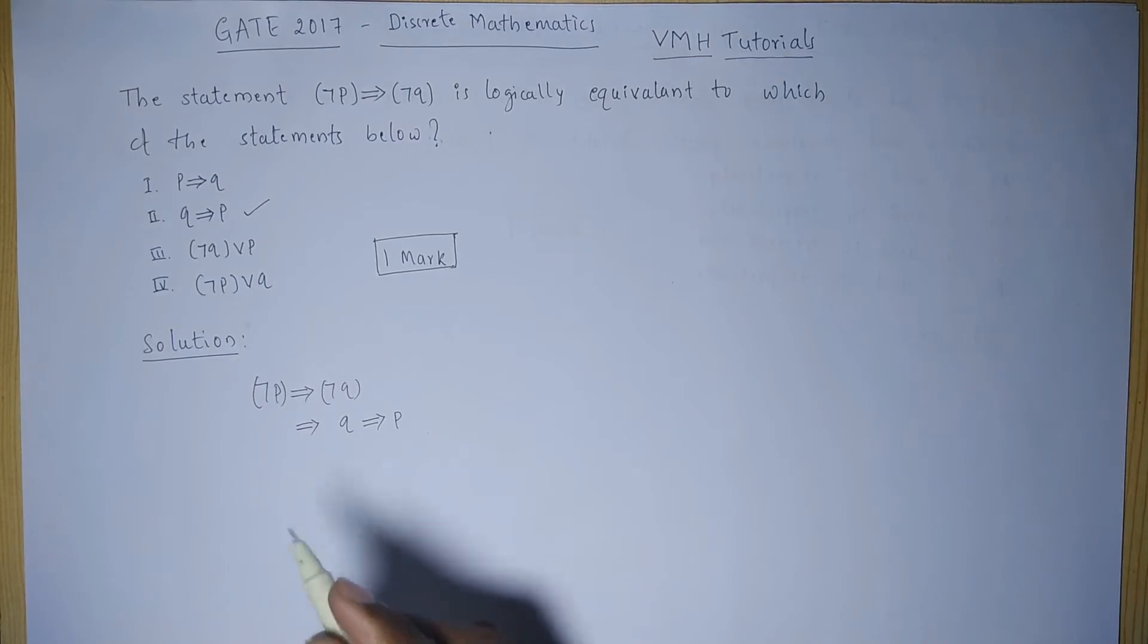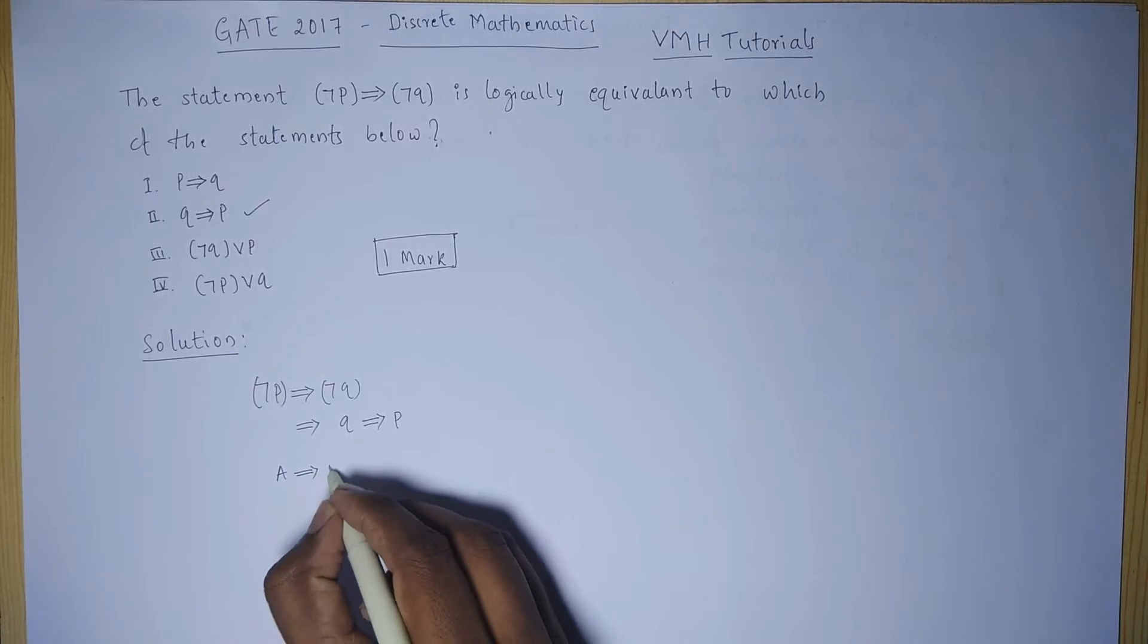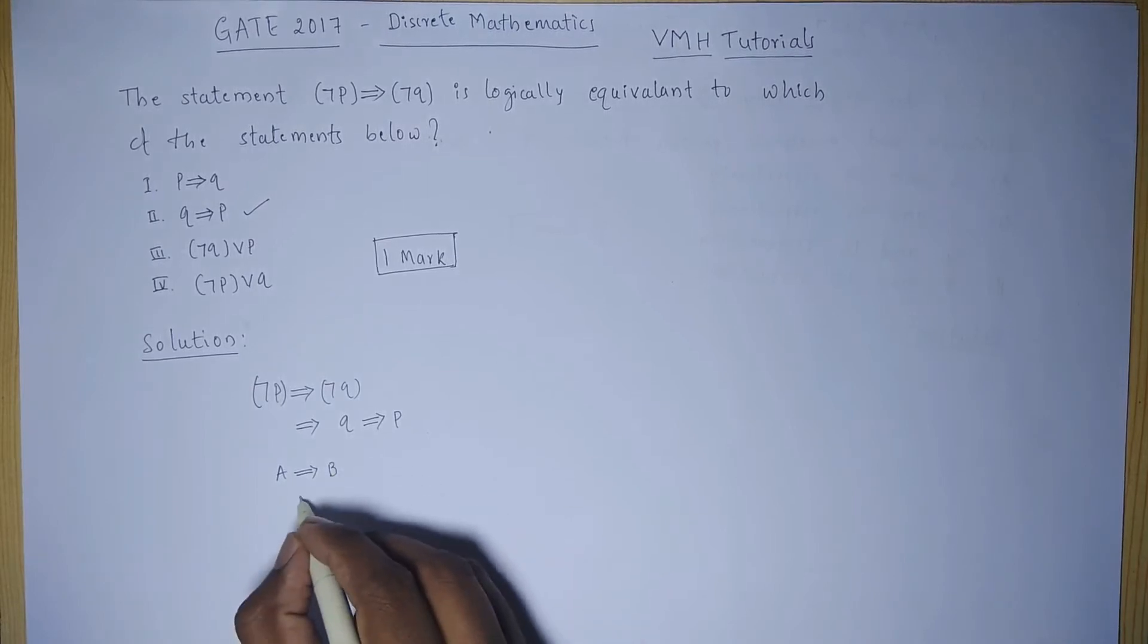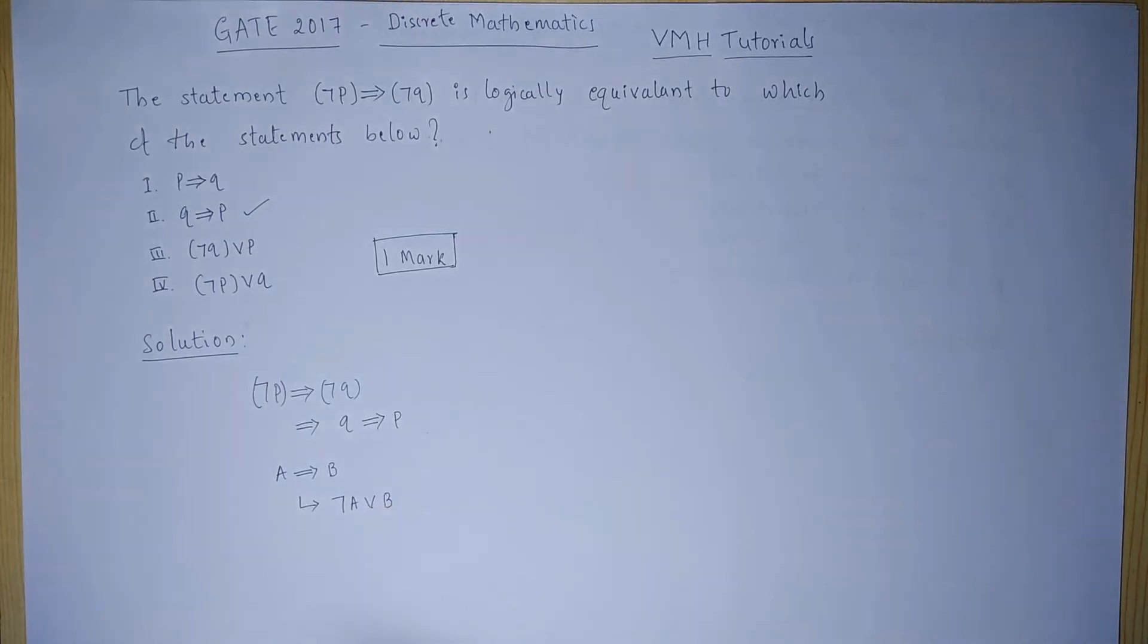Also, we know that if A implies B, it can also be written like negation of A or B.